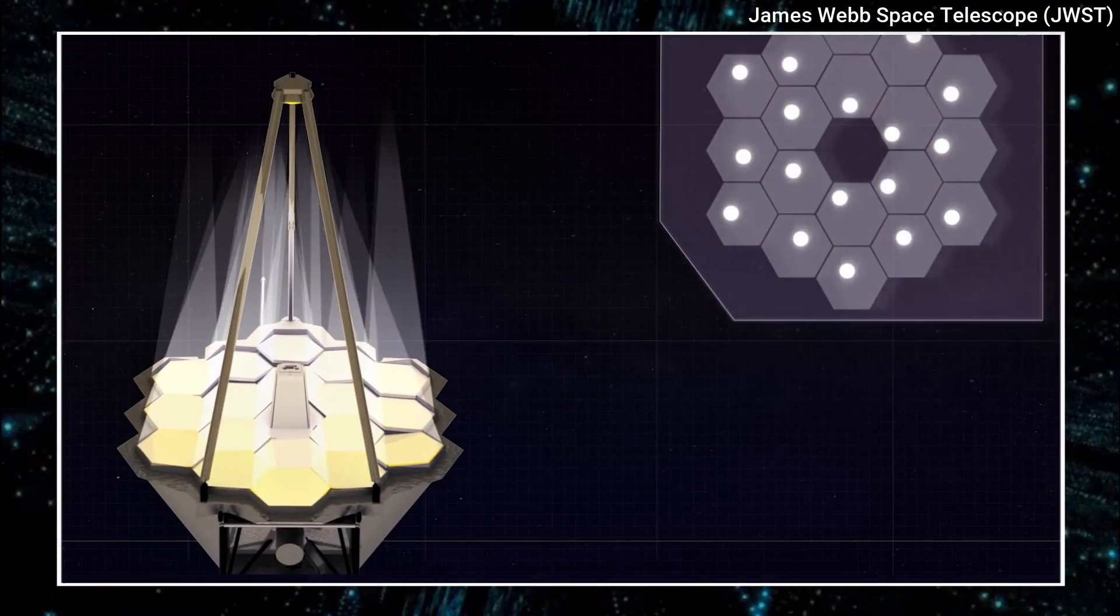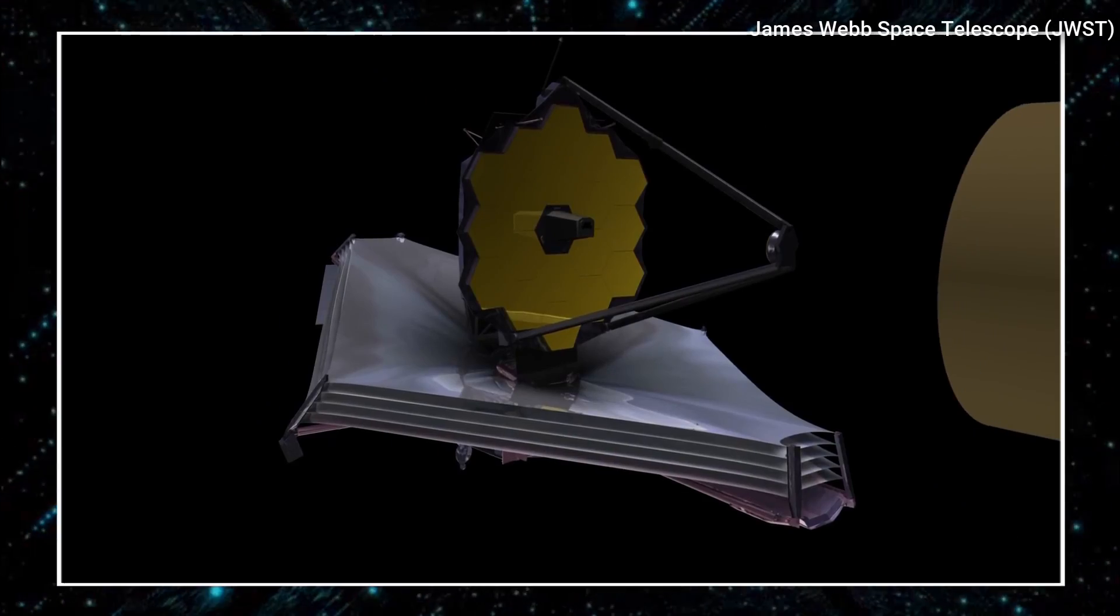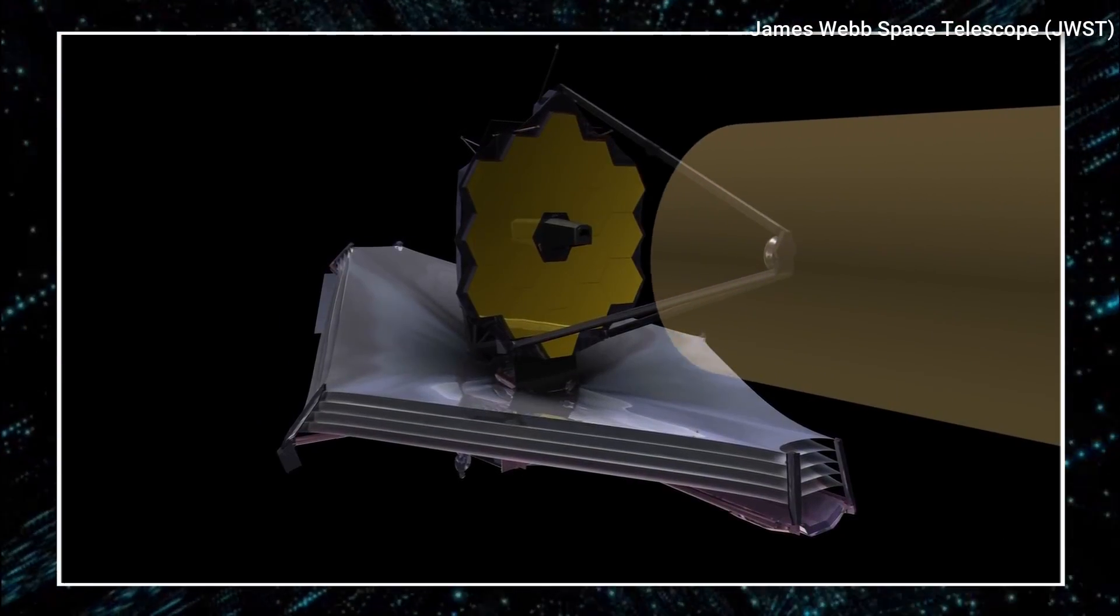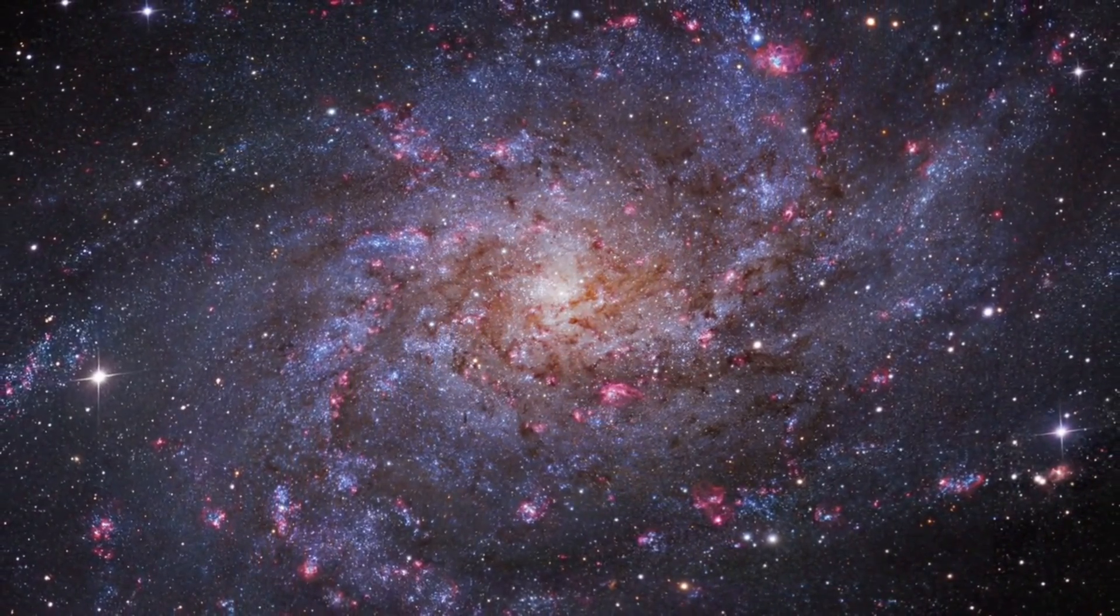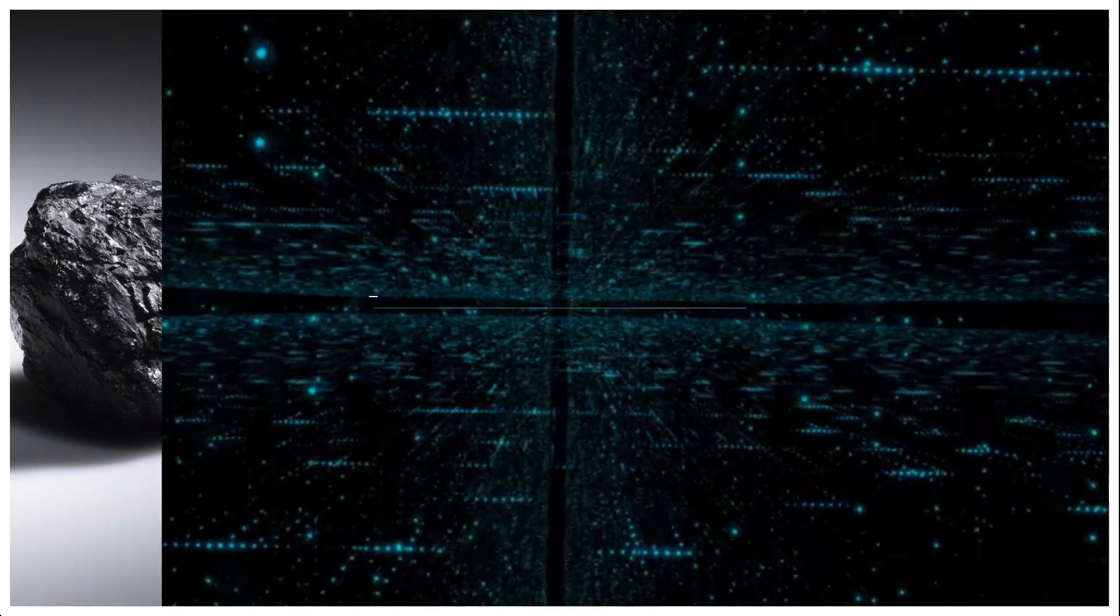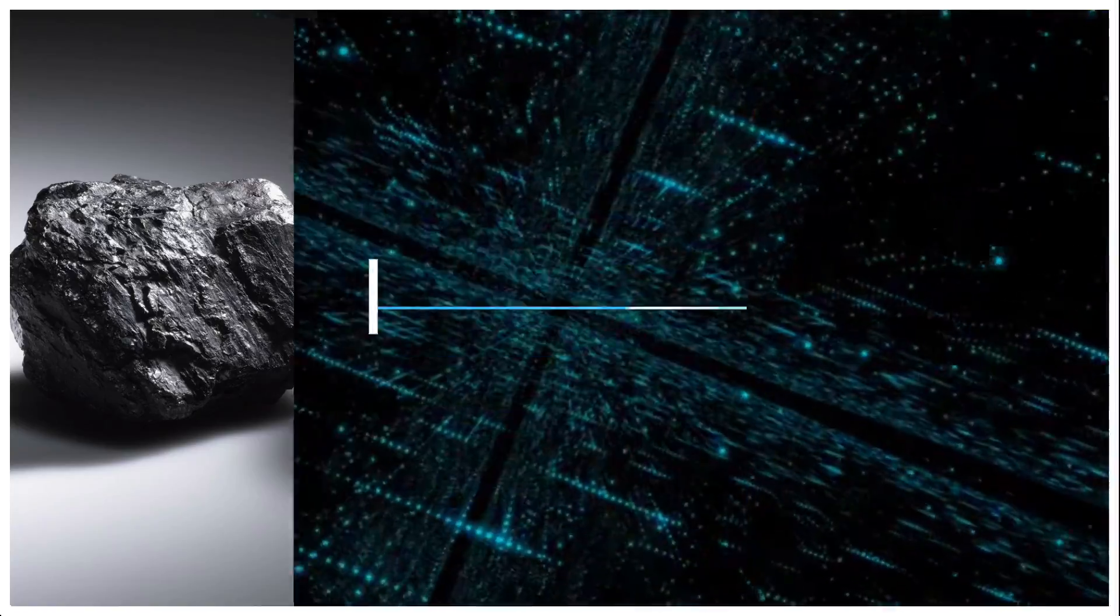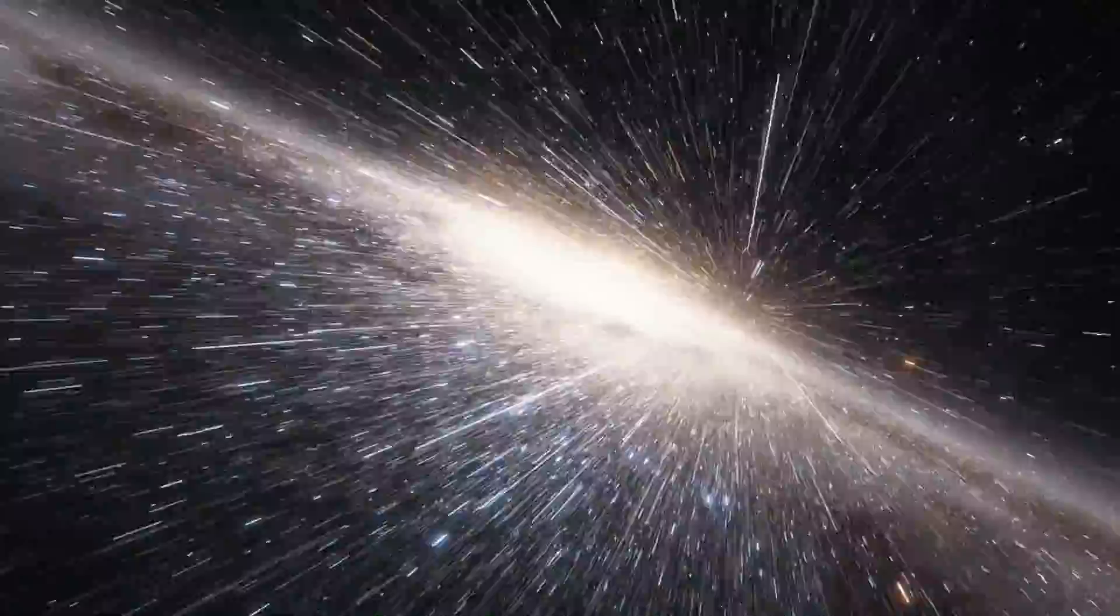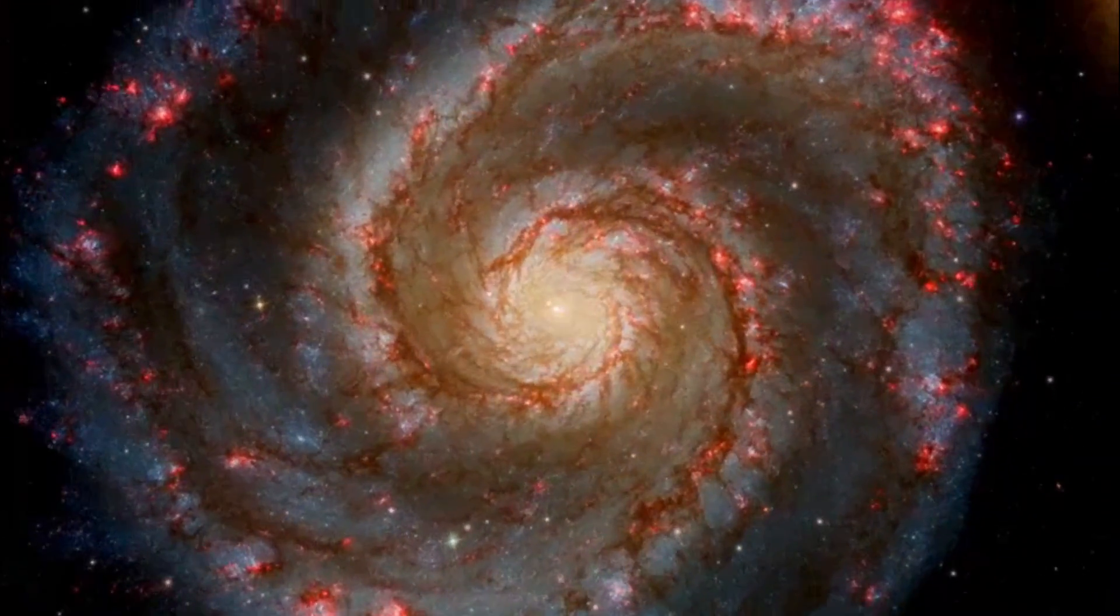This galaxy existed when the universe was only about 800 million years old. This galaxy has important properties that could explain why the James Webb telescope has discovered so many unusual galaxies in recent months. This galaxy is unique because of its extremely high metallicity, which is a measure of the abundance of heavy elements such as carbon, oxygen, and nitrogen in comparison to hydrogen and helium. Despite being formed relatively early in the universe's history, this high level of metallicity indicates that the galaxy had already gone through several generations of star formation.